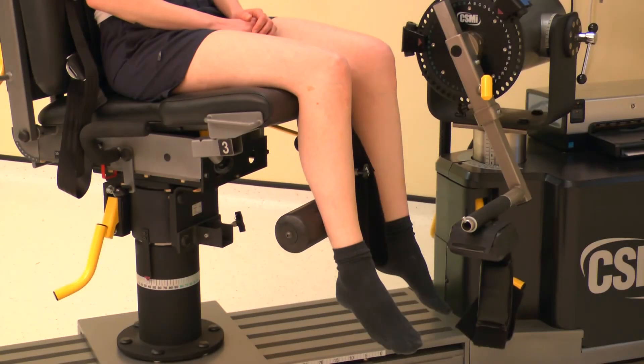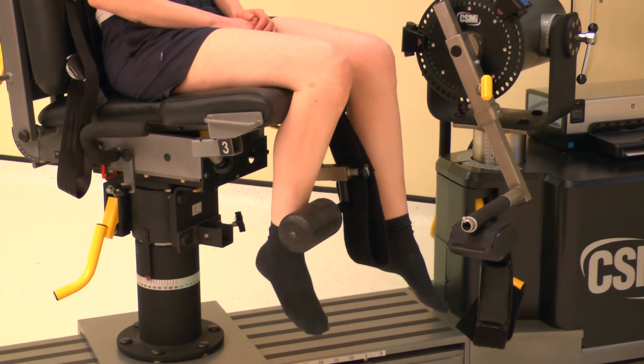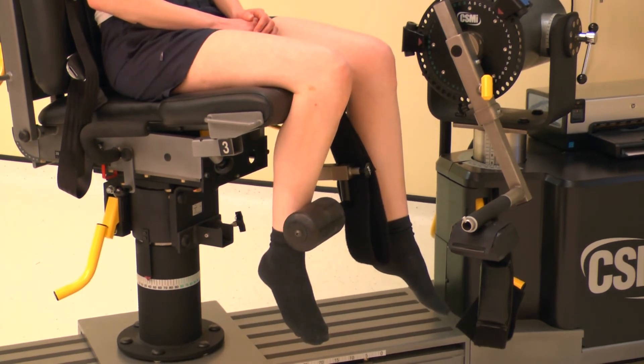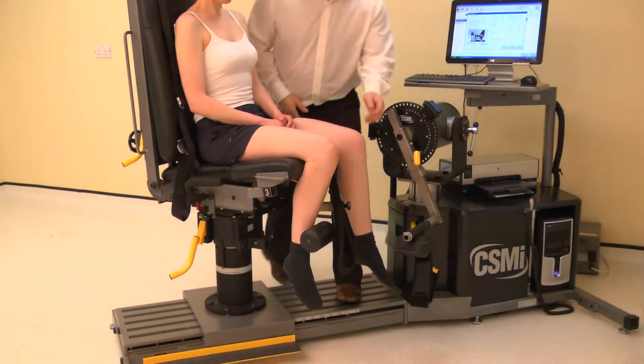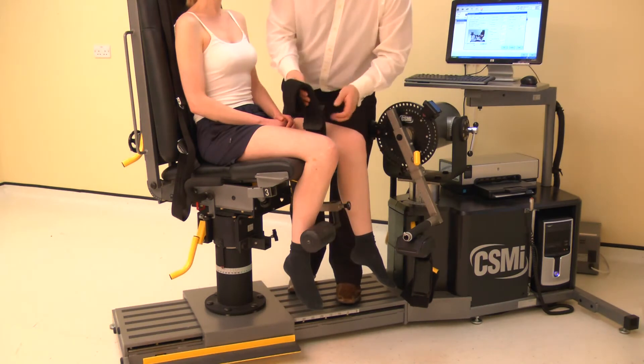To use the contralateral limb stabilizer, simply place the limb not being tested behind the pad. Now attach the thigh strap to the leg to be tested.